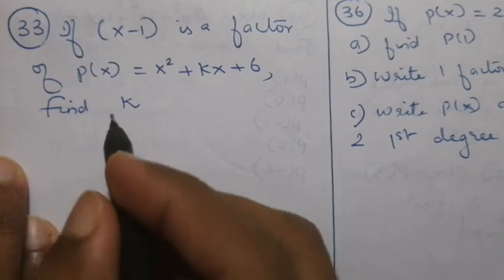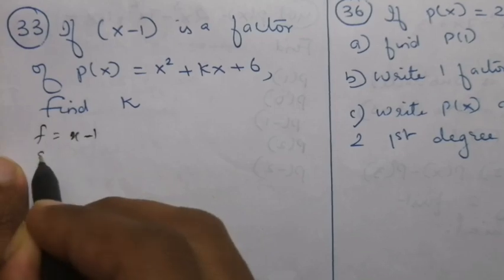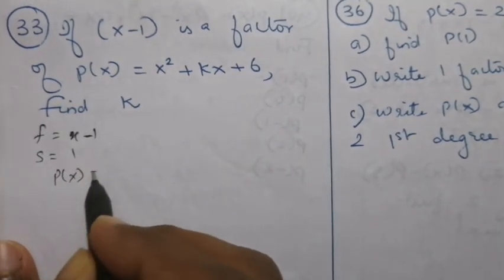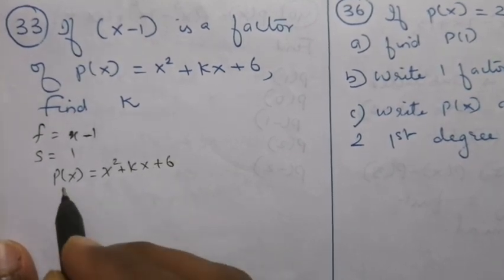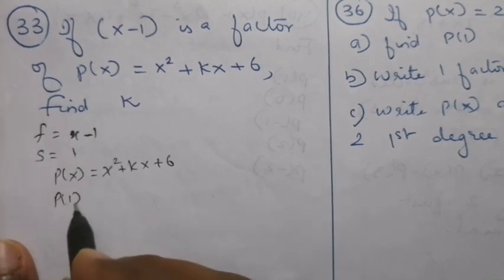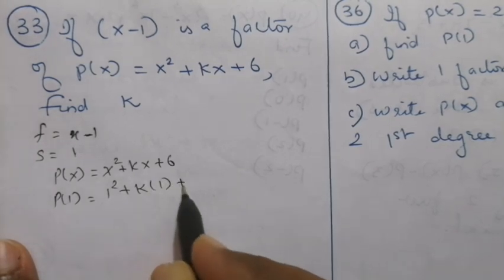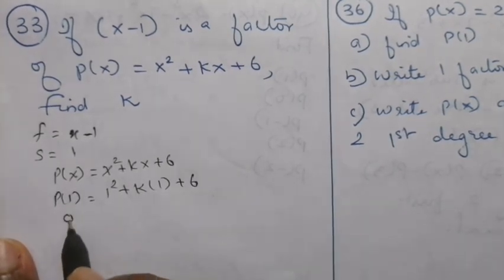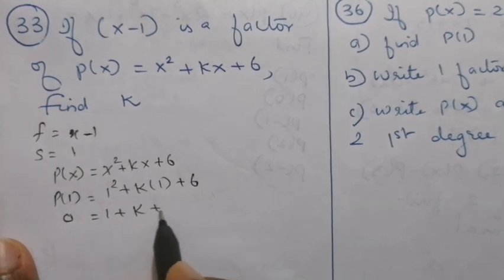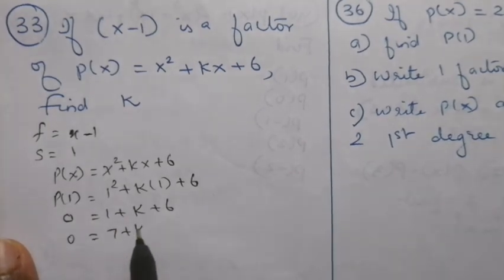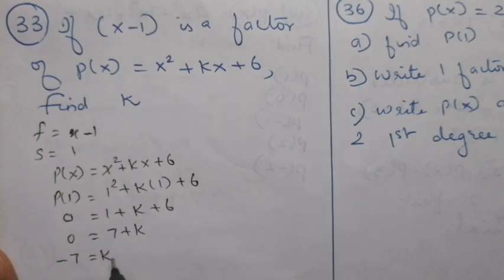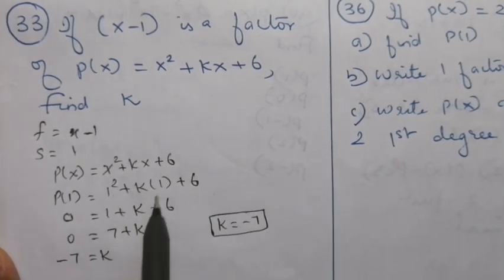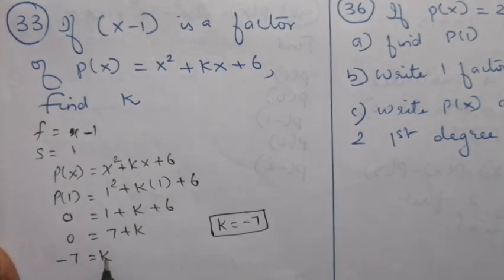If x minus 1 is a factor of p of x equals x squared plus kx plus 6, find k. Since x minus 1 is a factor, the solution is x equals 1. Substituting: 1 squared plus k times 1 plus 6 equals 0. So 1 plus k plus 6 equals 0, giving 7 plus k equals 0, therefore k equals minus 7.